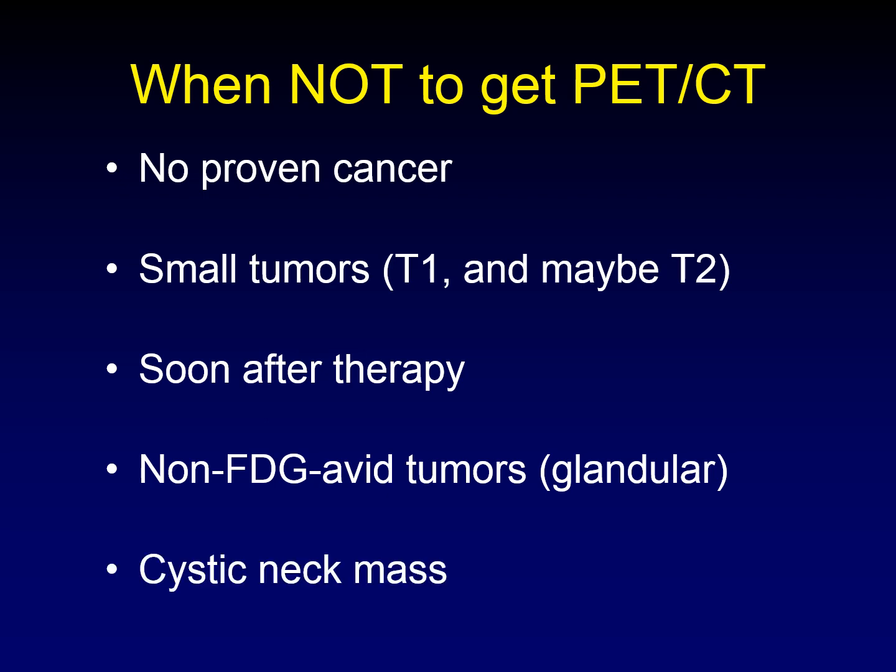Cystic neck masses are really tricky. If you are trying to evaluate a cystic neck mass to determine whether it represents benign or malignant disease, don't use PET-CT — you're better off resecting it. PET-CT is extremely misleading for purely cystic neck masses. Metastatic disease can have so little viable tissue in the periphery that it doesn't show up on PET, and inflammatory tissue around benign cysts can produce false positives. Wait until you know whether you're dealing with cancer.